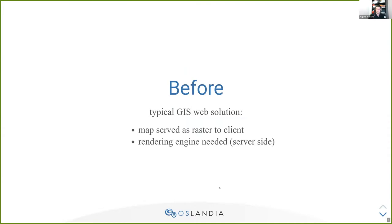Ostendia is a service company, so we build applications — JS applications for customers. Basically in the past we had no real choices, so we served maps as raster to the client, to the front-end web front-end. And so it involves having a rendering engine on the server — for example, a QGIS server, a MapServer, or a GeoServer.